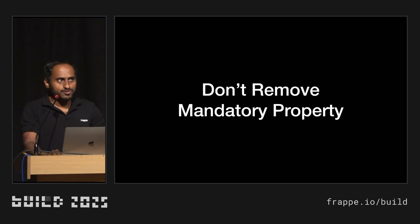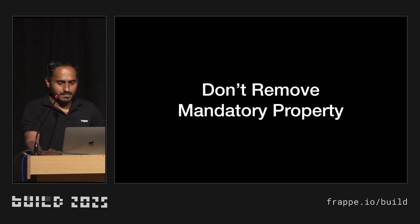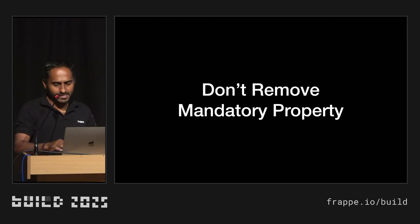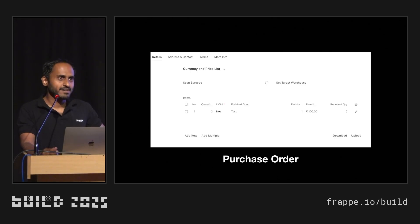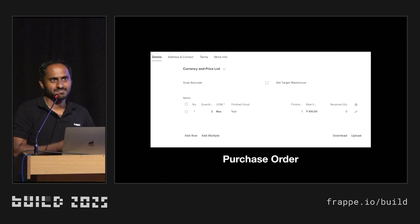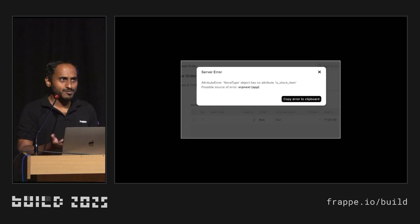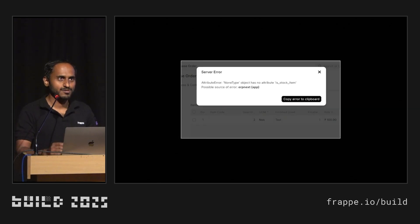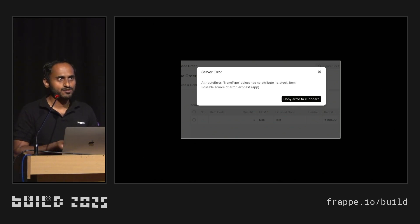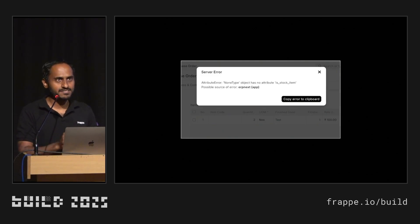Also, most devs remove the mandatory properties of standard fields. Frappe teams add mandatory properties on fields because they have written code that depends on those fields. For example, one developer removed the mandatory property for item code in the purchase order because he didn't want to use item code there. Obviously the code won't work and it has broken. My suggestion: use a default item, maybe hide the field from the user, but whatever the use case, make sure the mandatory property should not be removed.